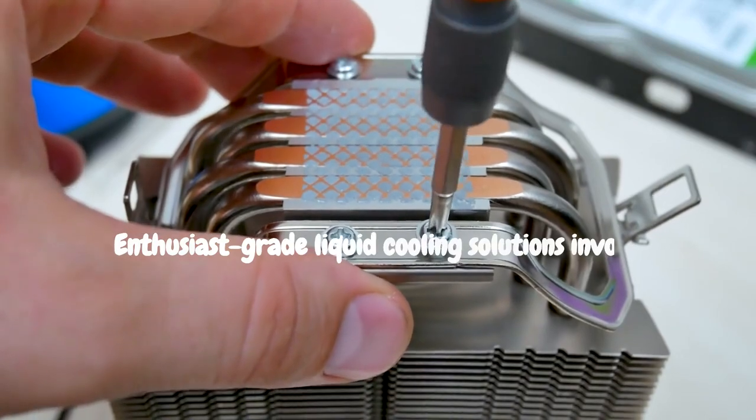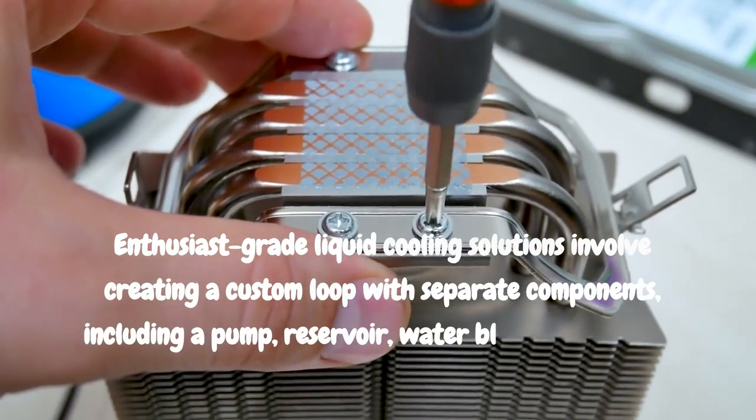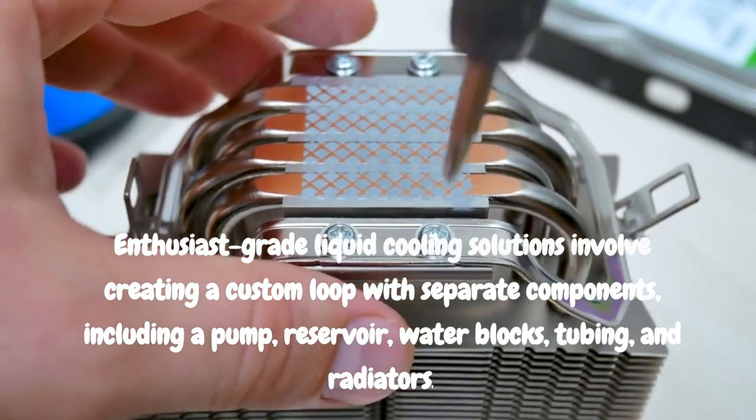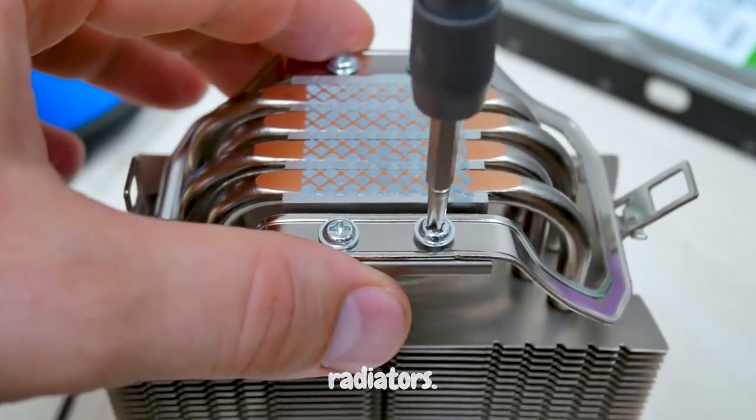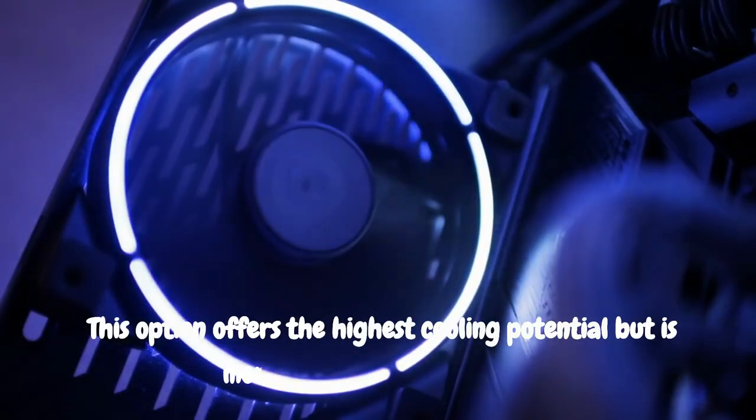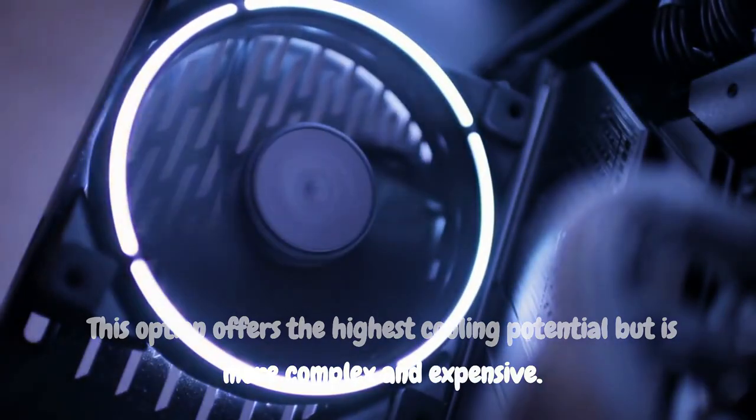Enthusiast-grade liquid cooling solutions involve creating a custom loop with separate components, including a pump, reservoir, waterblocks, tubing, and radiators. This option offers the highest cooling potential but is more complex and expensive.